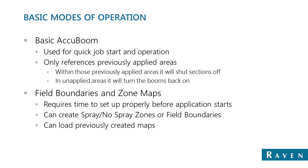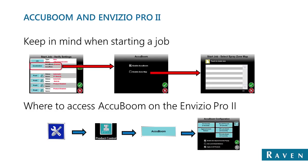There are a few basic modes of operation with Raven AccuBoom. With the Invisio Pro and Viper Pro, we can change how AccuBoom starts when we begin a job — basic AccuBoom or more advanced features like field boundary or zone maps. For guys running Invisio Pro 1 or 2, when starting a job, make sure AccuBoom is set to enabled. For advanced features, put a check mark in Create Zone Map, where you can create a new one or load previous field boundaries or zone maps.